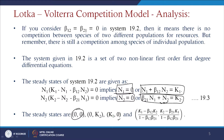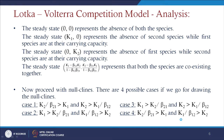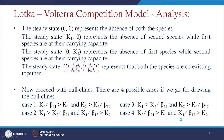The steady state (0,0) represents the absence of both species, so the population cannot grow. (K1, 0) means the first species is present and the second is absent. (0, K2) means the first species is absent and the second is present at maximum carrying capacity. The fourth point represents both species coexisting at that population level.